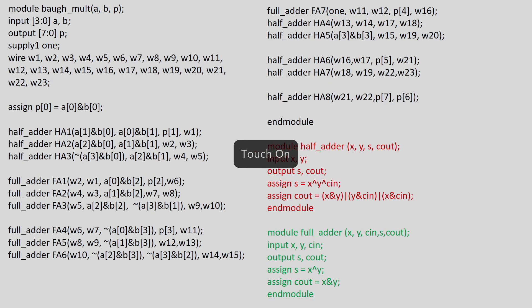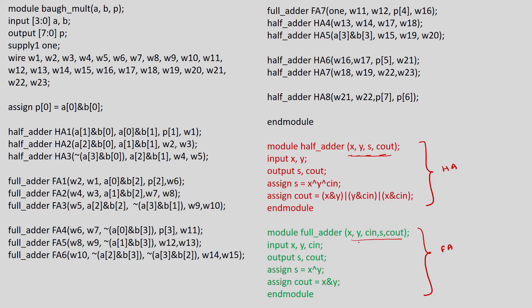This is the Verilog code corresponding to the Booth multiplier. We are constructing this Booth multiplier using half adders and full adders. This is the code for the half adder — we have taken x and y as inputs, sum and c_out as outputs. Sum is x XOR y, and carry is x AND y. This is the module for the half adder, and this is the module for the full adder. Here also we have x, y, c_in, s, c_out — this is the order for instantiating inputs and outputs.